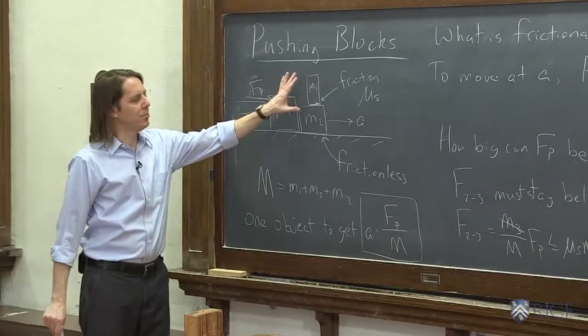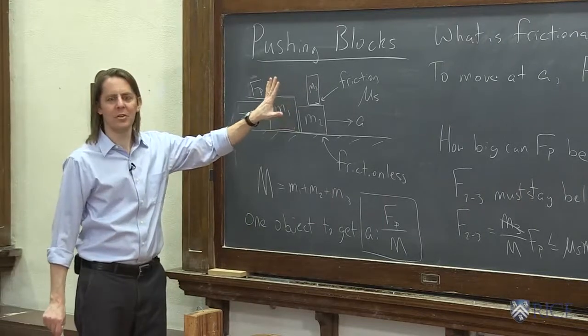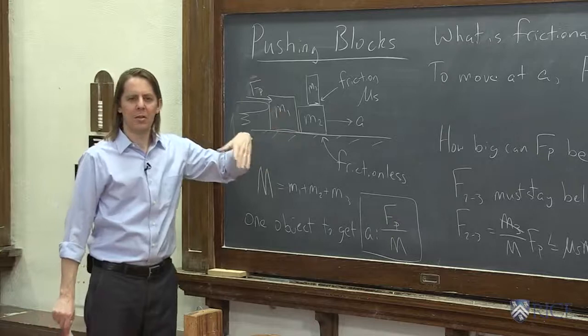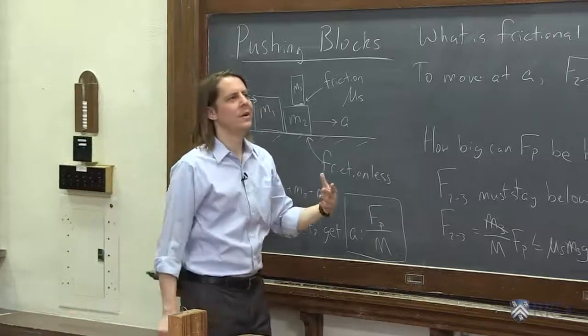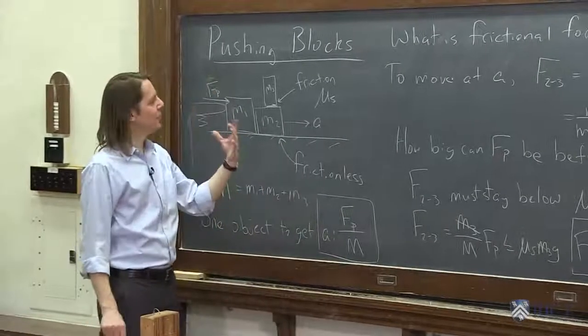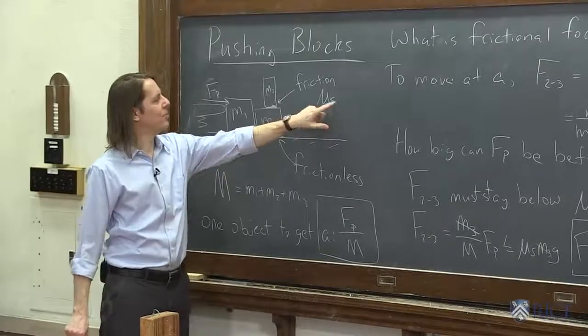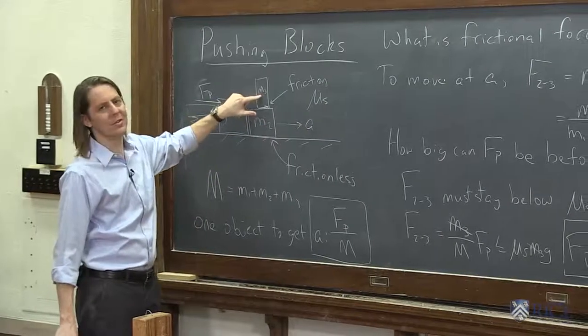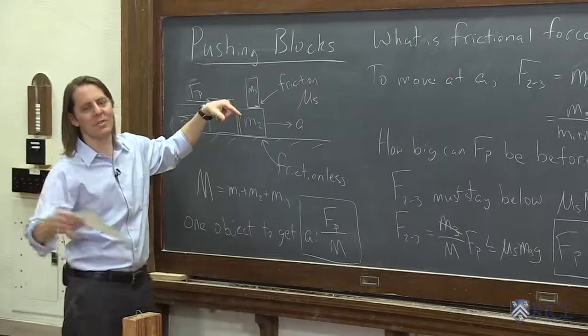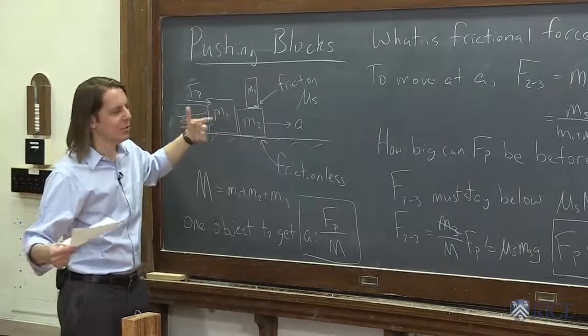That's the hardest you can push without this block sliding backwards. And you might be a little surprised it doesn't have M3 in it, but that actually often happens in these kinds of problems. The force you're limited to, F equals ma. The force is mu s times the normal force. But if everything is level, the normal force has M3 in it, because it's M3 times g, which cancels the ma part.